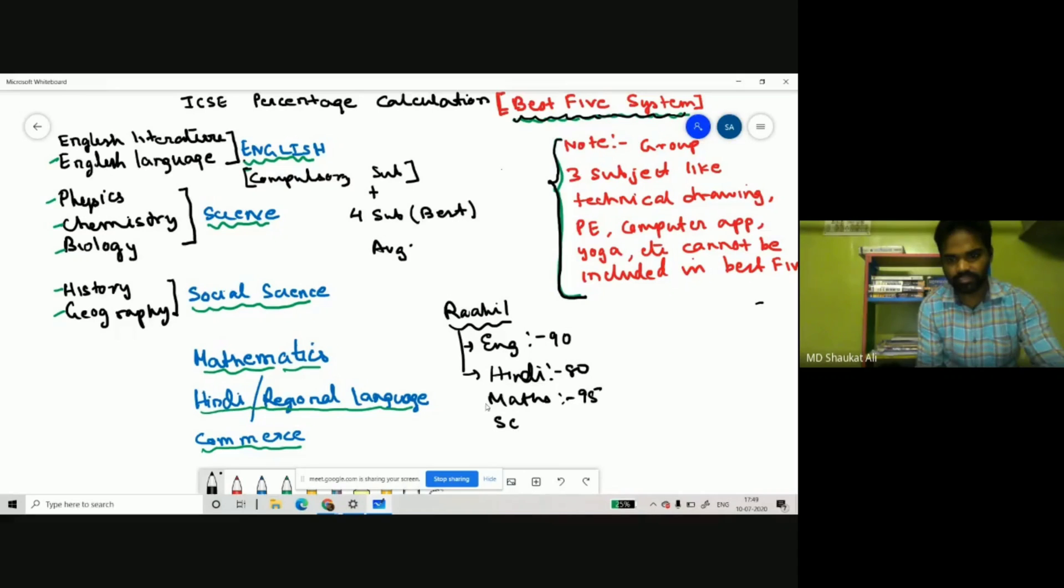In science suppose he gets 89, in social studies he gets 89, and he had a sixth subject where he got 99. So these were the six subjects, out of 600 total.